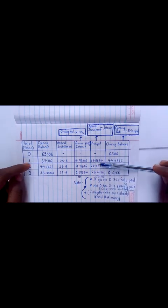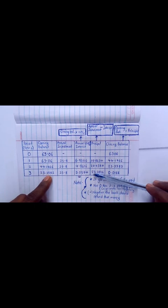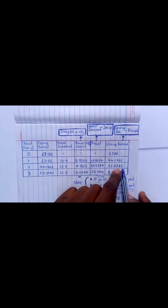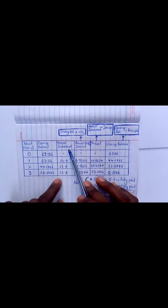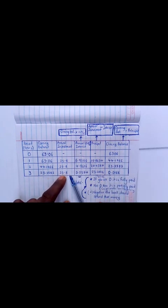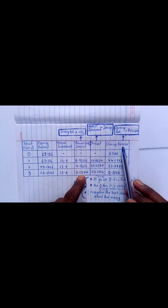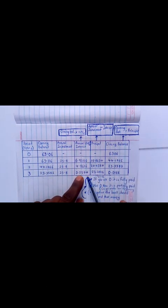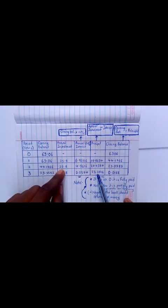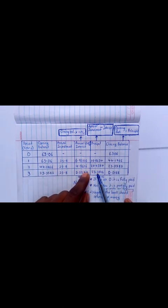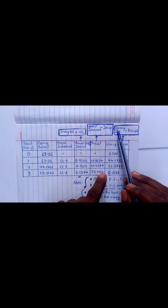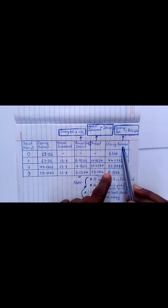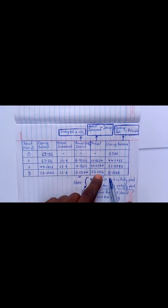For year three, this closing balance becomes my opening balance in year three. The annual installment is constant. You get closing balance times 11 percent, you get this. Principal is annual installment minus annual interest. To get the closing balance, it's opening balance minus the principal. This minus this, you get 0.0166.